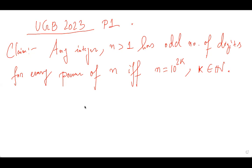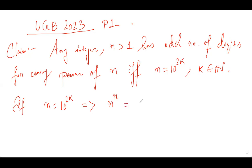Clearly, if n is of the form 10 to the power 2k, then for any power n to the power r, that equals 10 to the power 2kr. After the leading 1, you have an even number of zeros, giving an odd number of digits total. This works for every power.